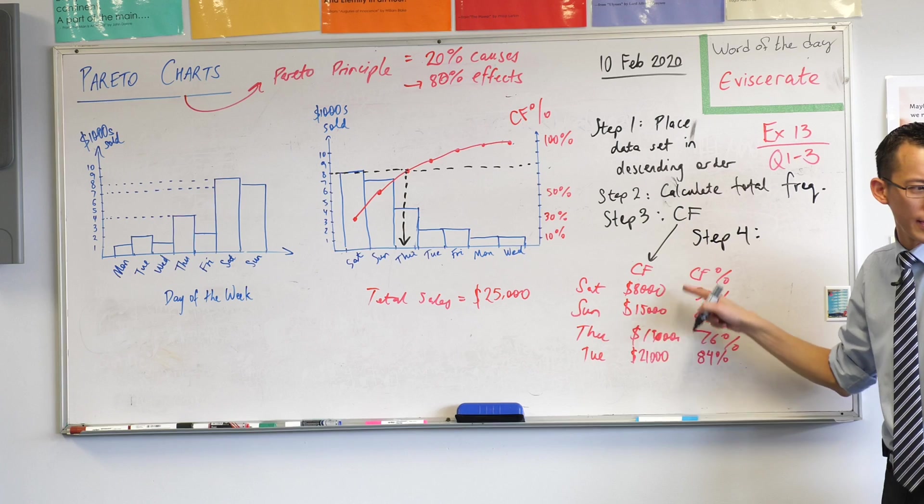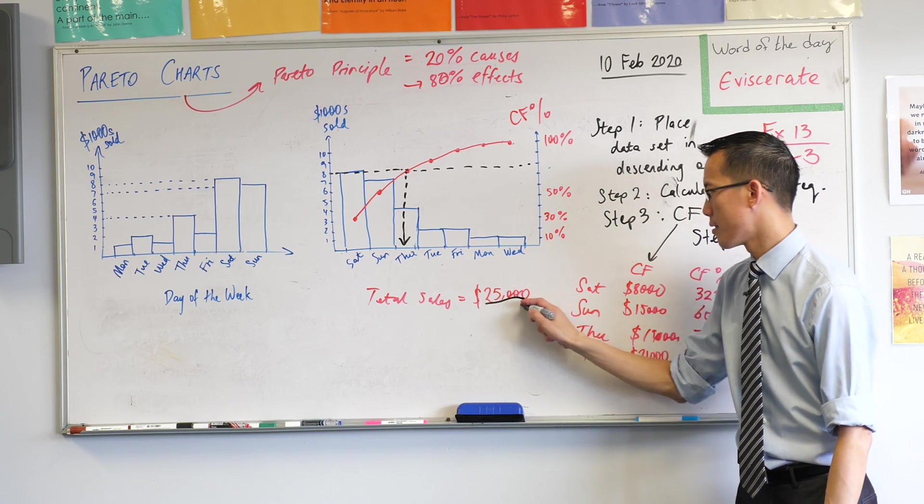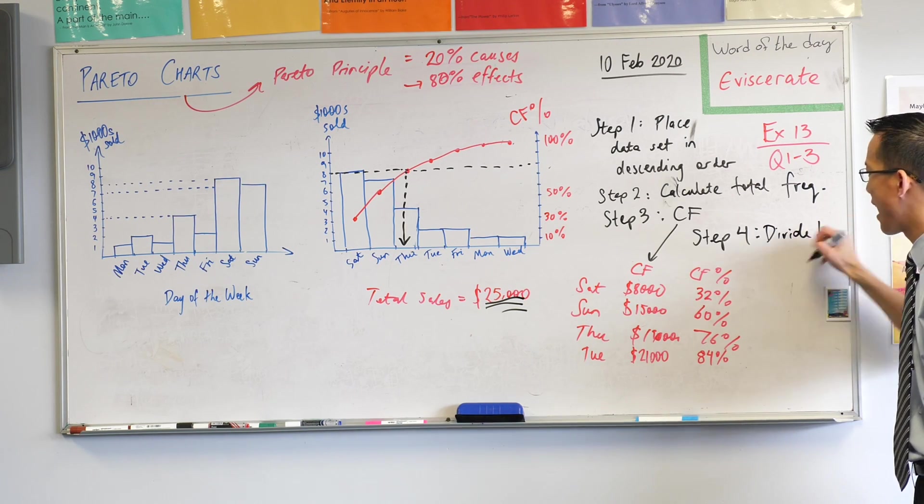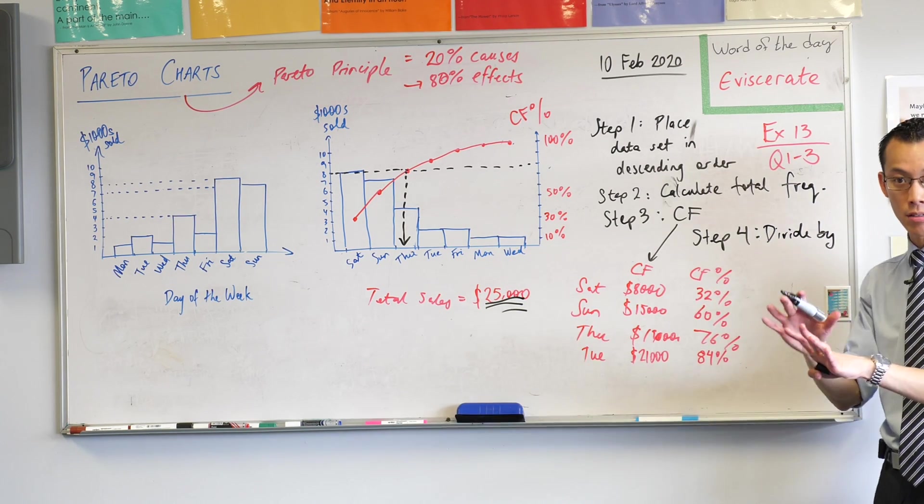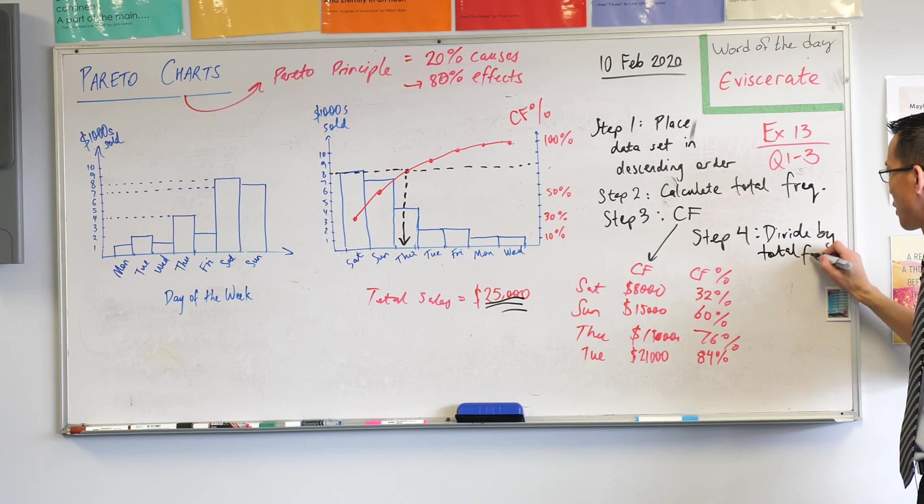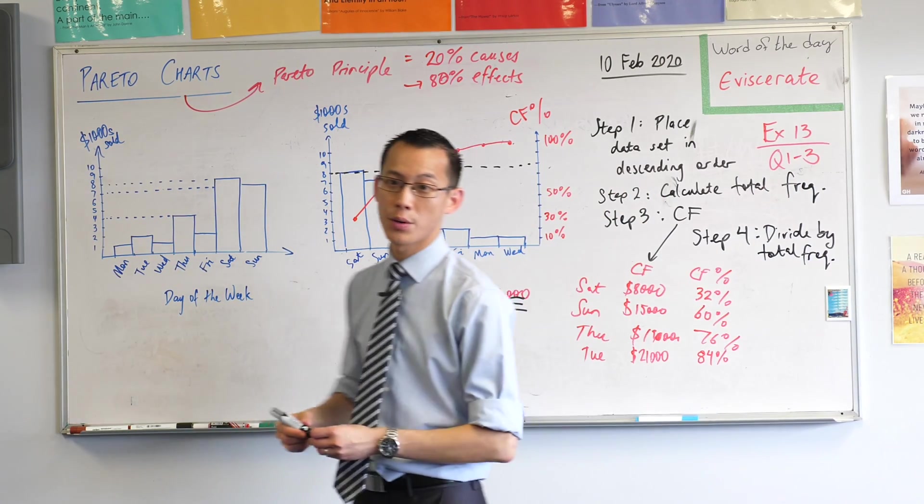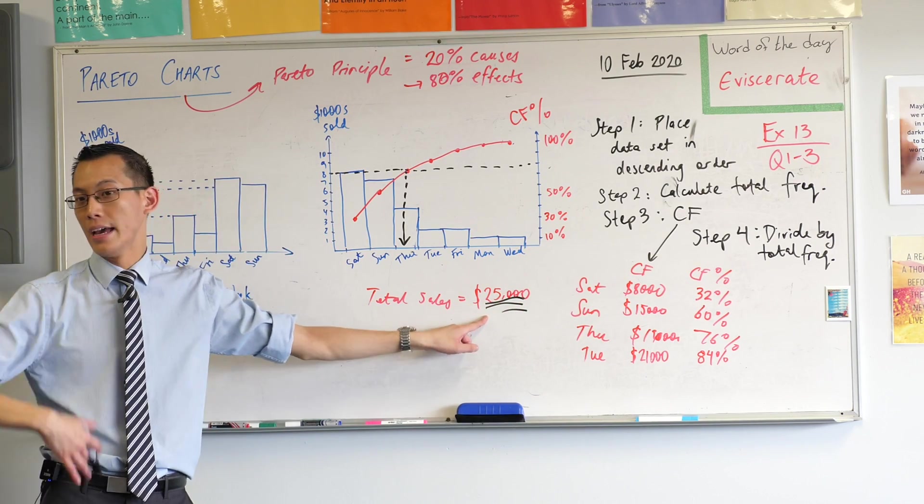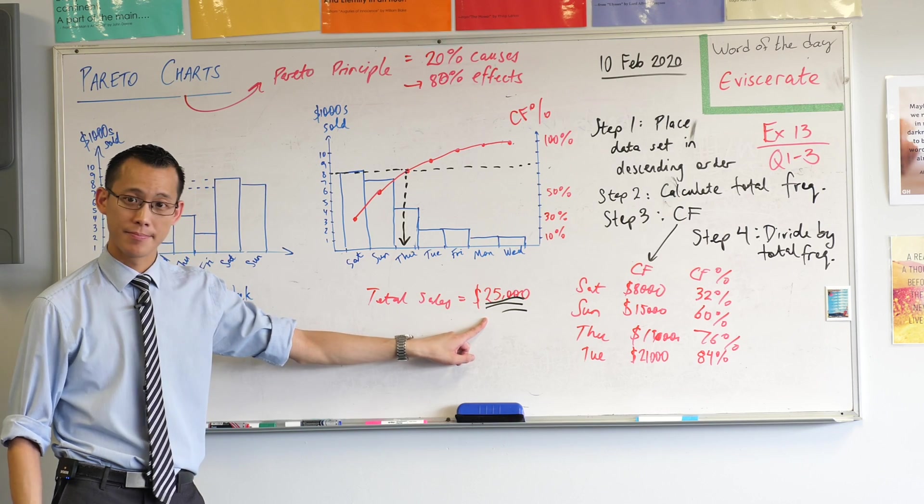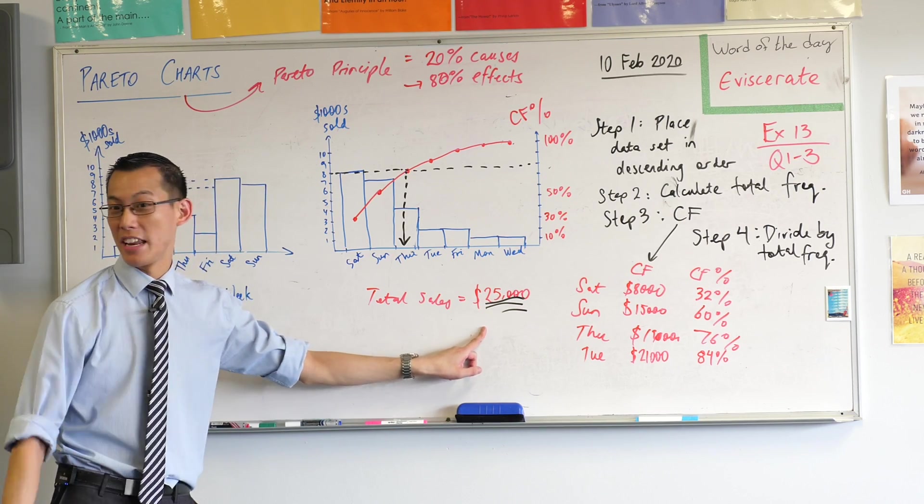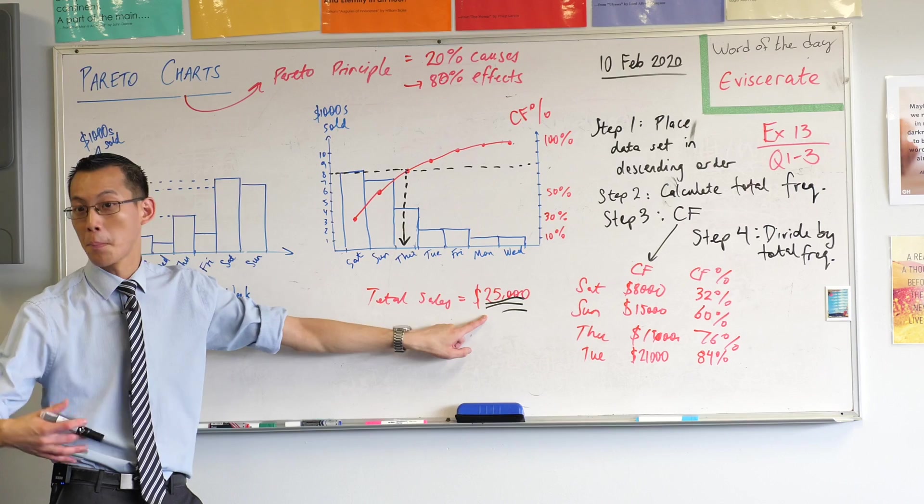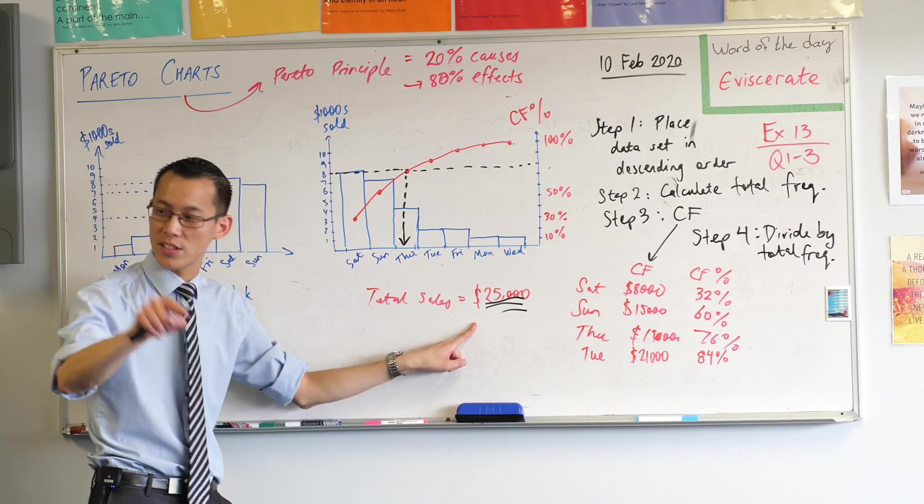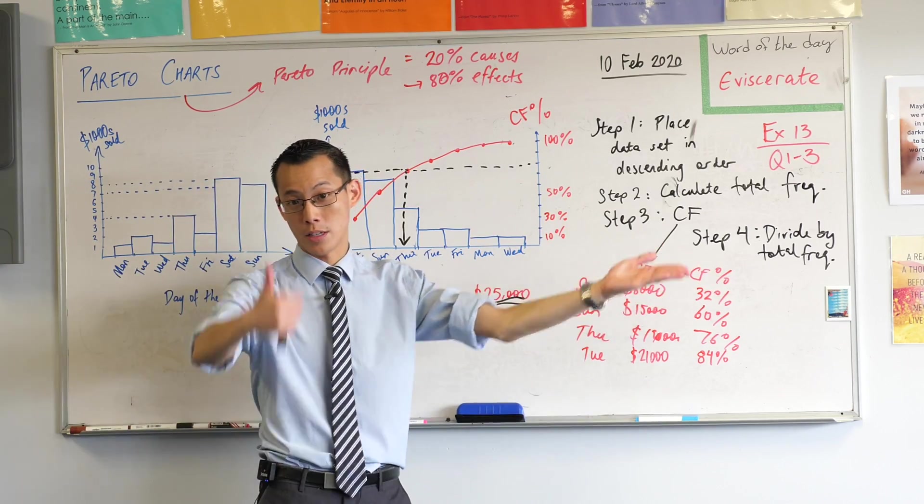Take these numbers. What do we divide by? Each one. We divide by the total frequency. Divide by total frequency. And that gives us the cumulative frequency percentage. Make sense? So divide by total frequency. So 8,000 over 25,000. Then 15,000 over 25,000. We're always comparing to the total sales. And how do we divide by the total? We don't need to times it by anything. You'll get 15,000 divided by 25,000 will be 0.6, which is 60%. 19,000 divided by 25,000 will be 0.76, which is 76%. Make sense?